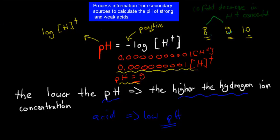The syllabus dot point says: process information from secondary sources to calculate the pH of strong and weak acids. So in this case, you might be given questions to do with only strong and weak acids for that dot point. We're going to go over a couple of examples, similar to what we've done in the past already.